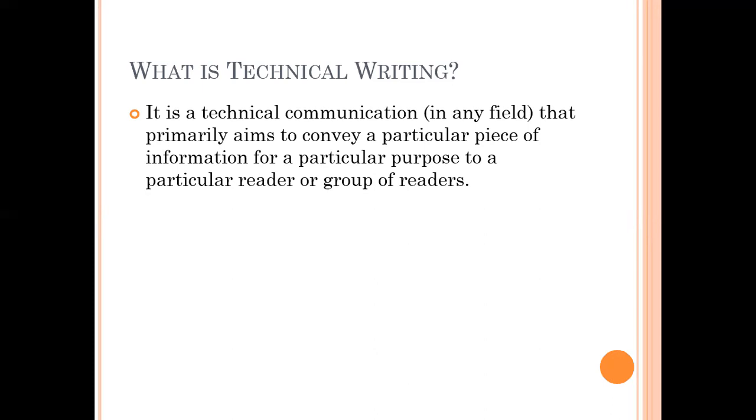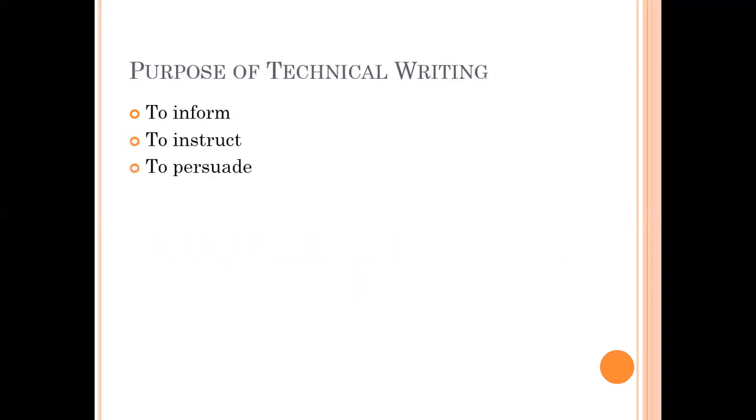Moving on to the purpose of technical writing. There are three purposes, as you see them on the list. Number one would be to inform, which is providing information. Number two is to instruct, and number three is to persuade. It could be giving information, giving instructions, or persuading someone.